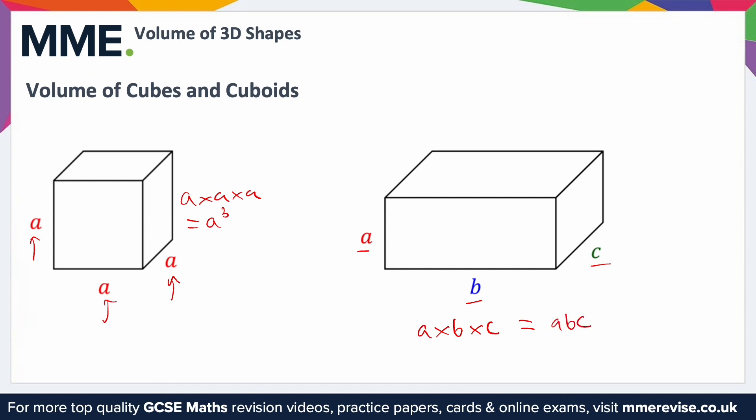So volume of a cube, you just do the side length cubed. Then for the volume of a cuboid, you just do the height times by the width times by the length.